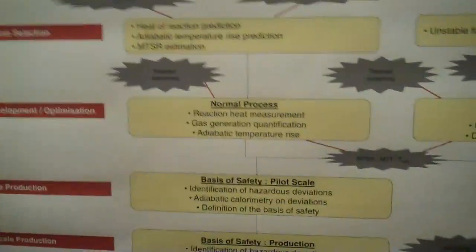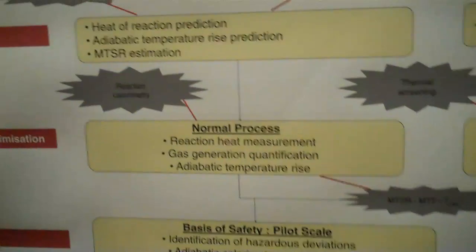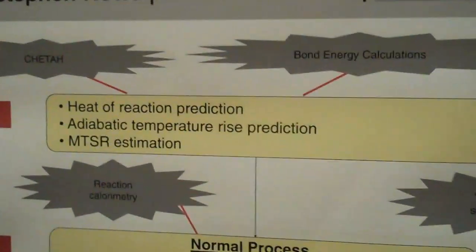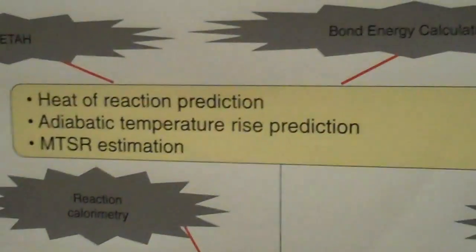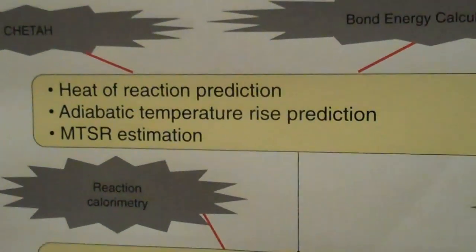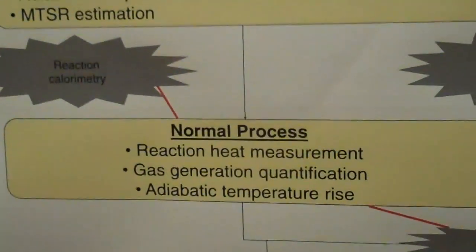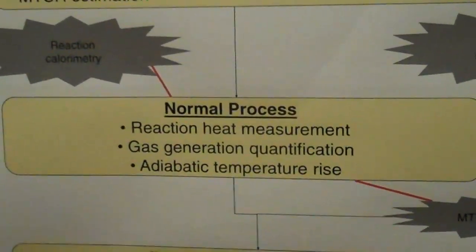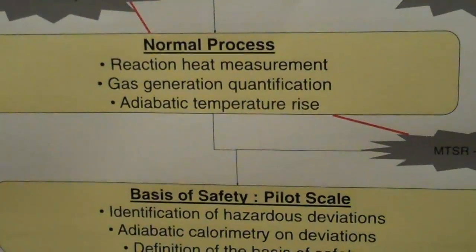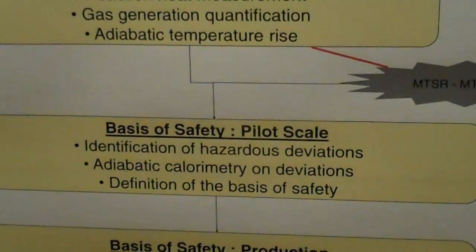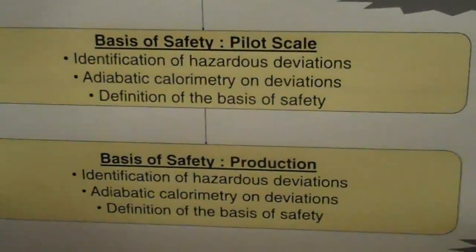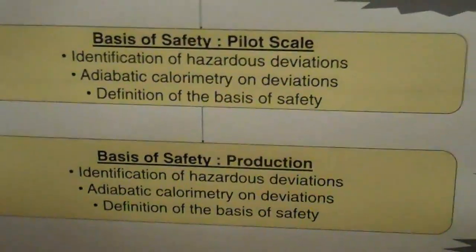We are trying to explain the different data that need to be collected at different stages. If that data is collected at each stage, it will result in a highly robust process. It will basically make it inherently safe — meaning it's part of the process, not an added-on feature.